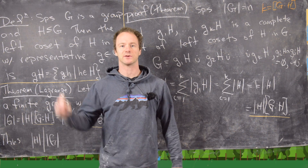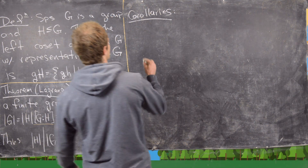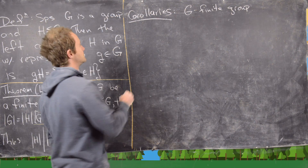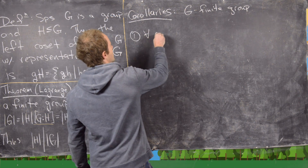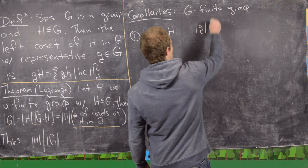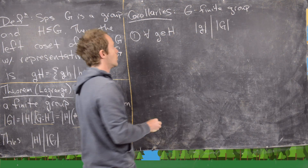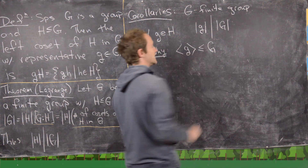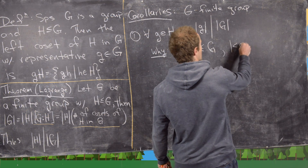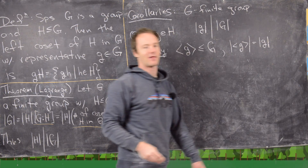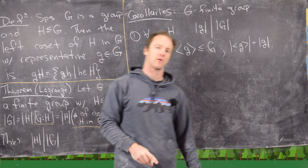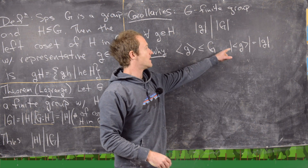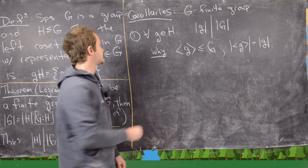Now let's look at a couple of quick corollaries of Lagrange's theorem. Let G be a finite group — abelian, non-abelian, anything. First: for all g in G, the order of the element divides the order of the group. This is because the cyclic subgroup ⟨g⟩ is a subgroup of G, and its order equals the order of g. Since any subgroup's order divides |G|, the order of g divides |G|.